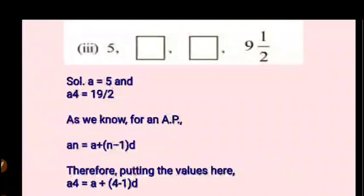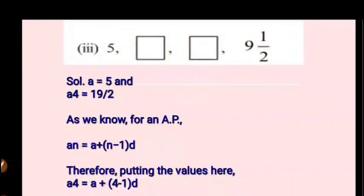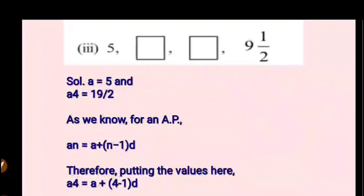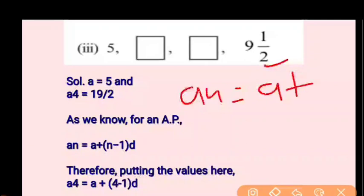Now the third part: A = 5 and A4 = 9½ are given; A2 and A3 are missing. Converting 9½ to an improper fraction: 2×9 + 1 = 19, so A4 = 19/2. Using the formula, A4 = A + 3D. Since A4 = 19/2 and A = 5, we write 19/2 = 5 + 3D.